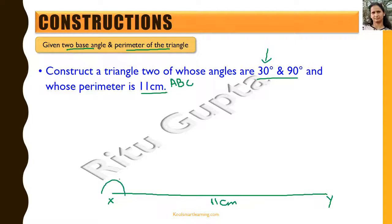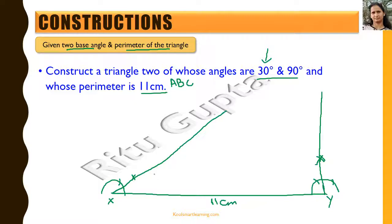At X we construct 30 degrees using compass and ruler construction. At point Y we construct 90 degrees. We then draw the angle bisectors of both these angles. The point where the two angle bisectors meet is point A.